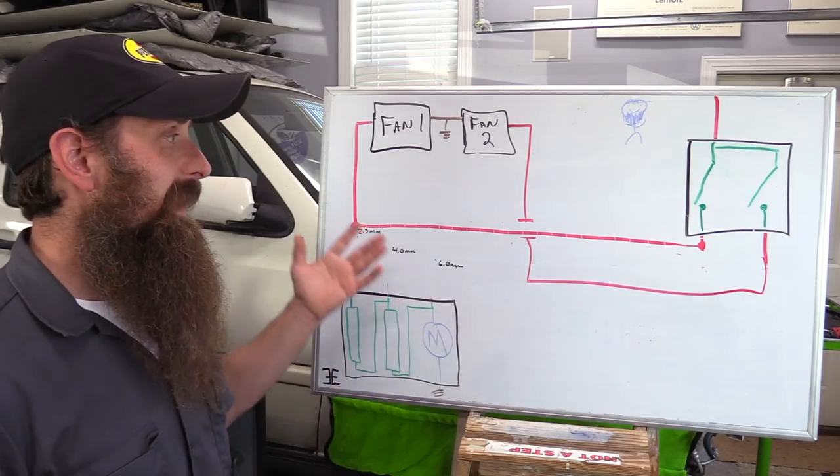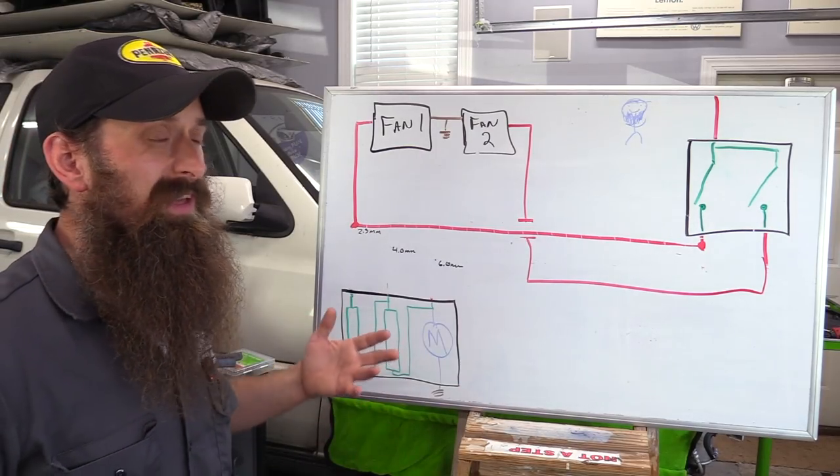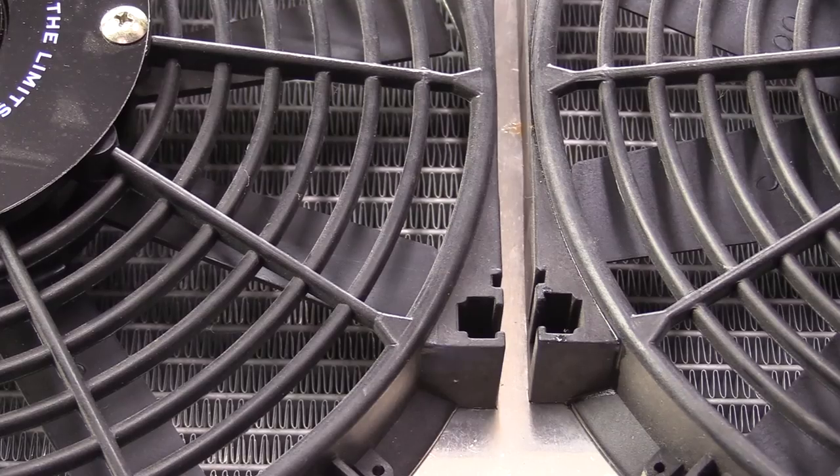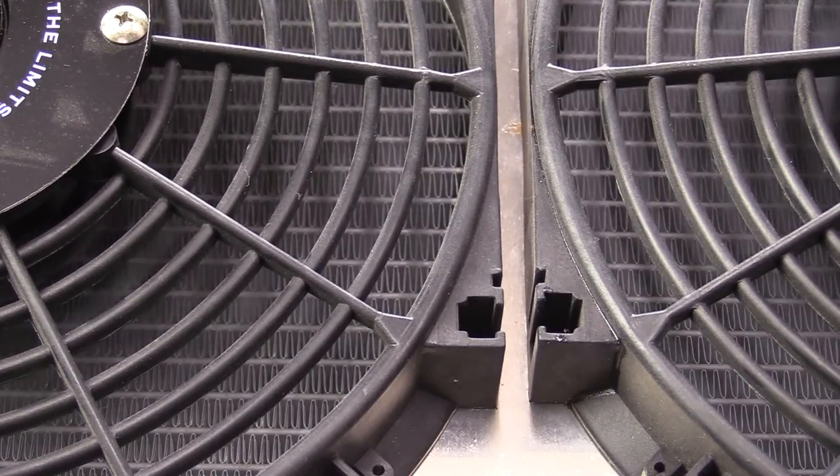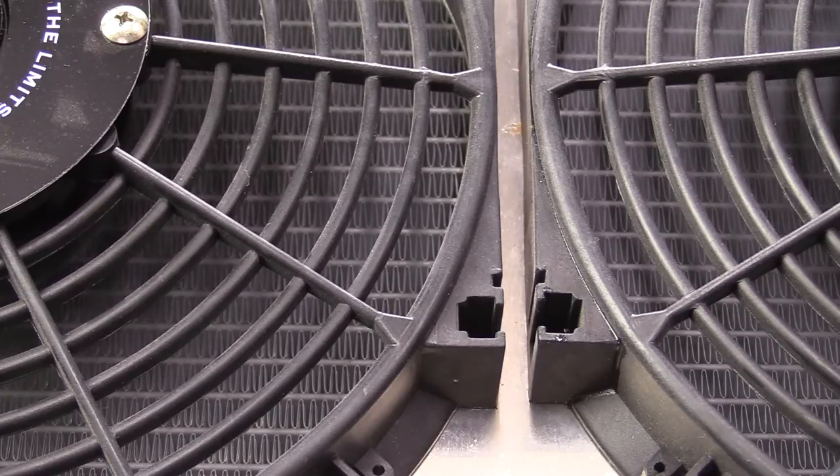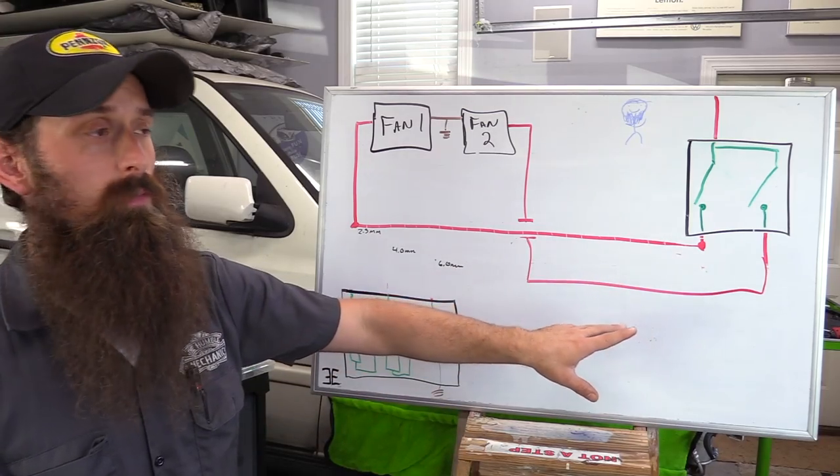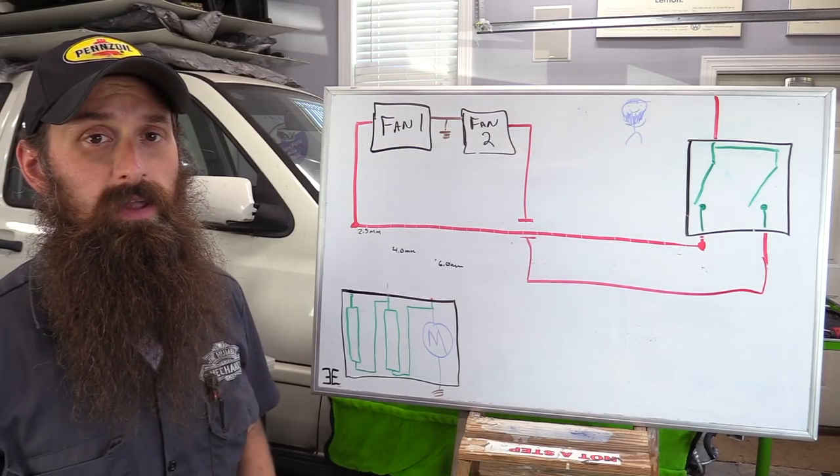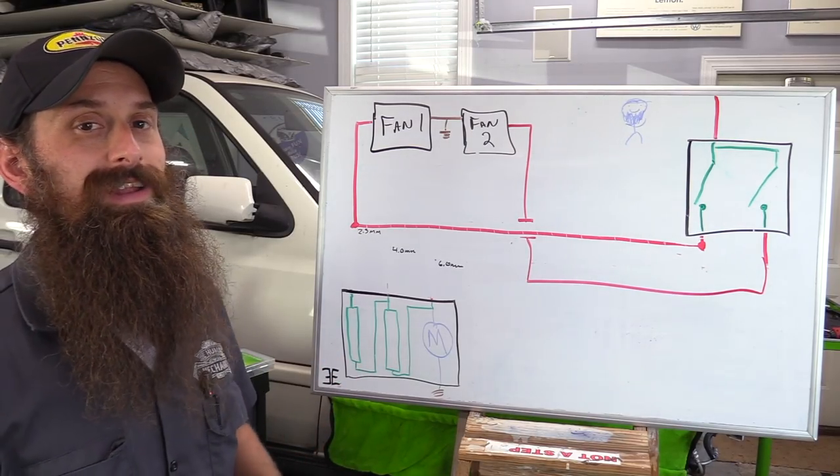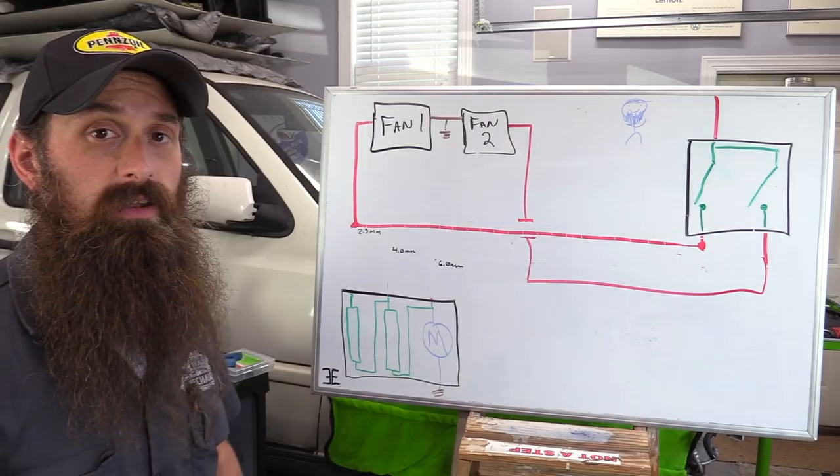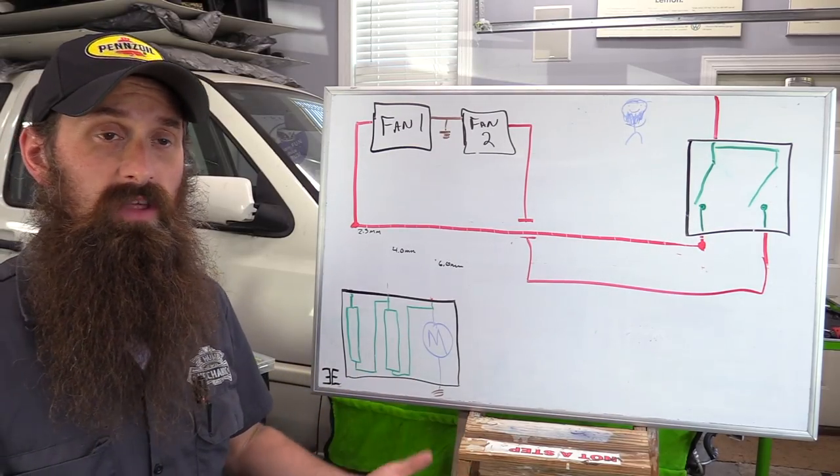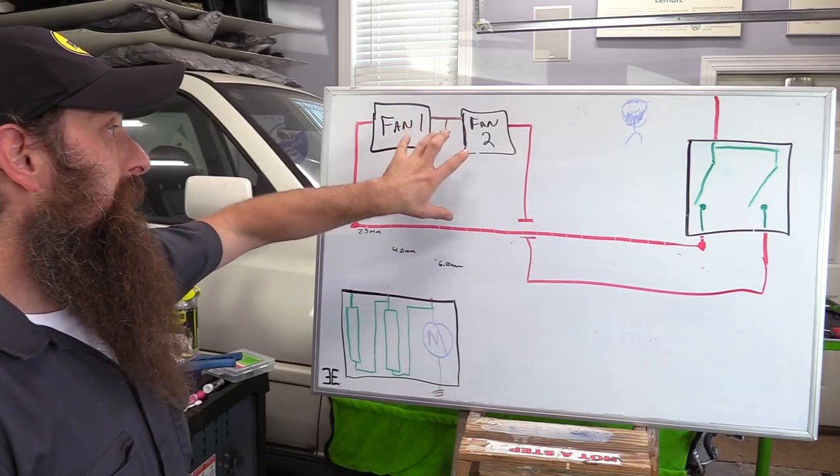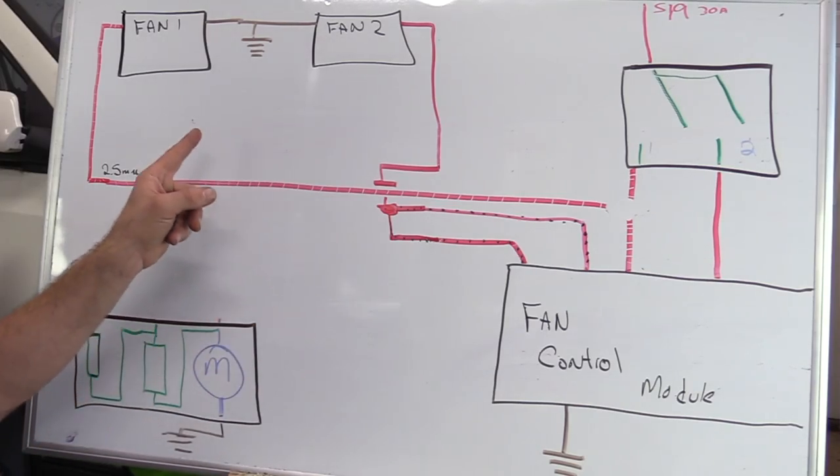So that begs the question, how do you figure out your setup? Well, it's actually not that hard to figure out. What you need to do is remember that fans only require power, require ground, and a way to turn them on. In the case of our fan control module, it was either the thermal switch or the fan control module turning them on and off. So you need to make sure you understand how they're being turned on from the factory setup. Then all you need to really do is kind of shift that around and apply it to your new fan setup.